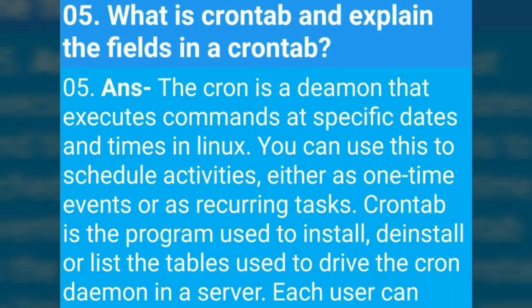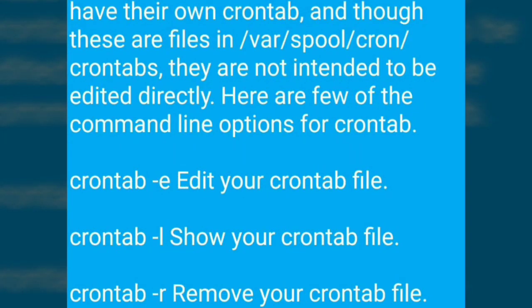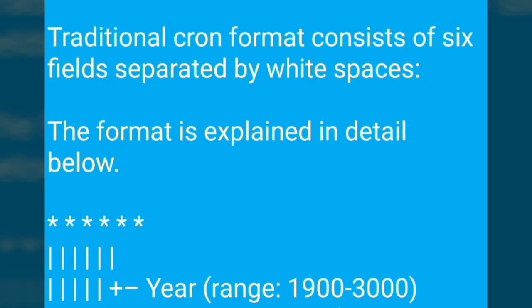What is crontab? Cron is a daemon that executes commands at specific dates and times in Linux. You can use it to schedule activities either as one-time events or as recurring tasks. Crontab is a program used to install, deinstall, or list the tables used to drive the cron daemon on a server. Each user can have their own crontab, stored in /var/spool/cron/crontabs, though these files are not intended to be edited directly. Command line options include: crontab -e (edit your crontab file), crontab -l (show your crontab file), crontab -r (remove your crontab file). Traditional cron format consists of six fields separated by white spaces.